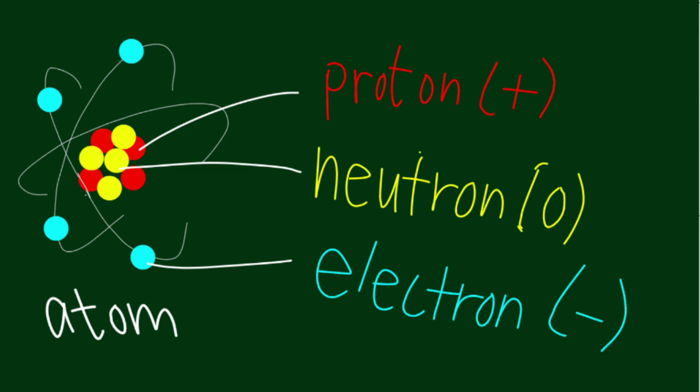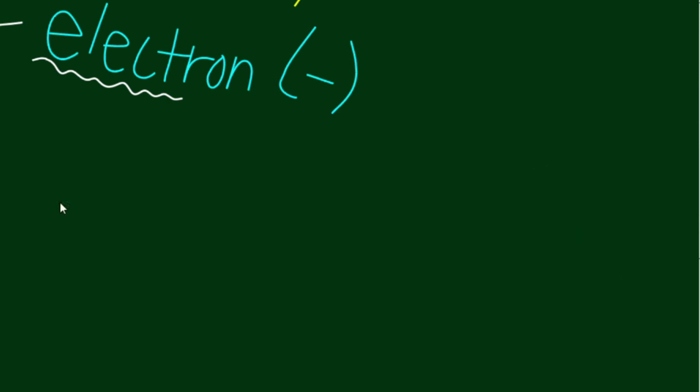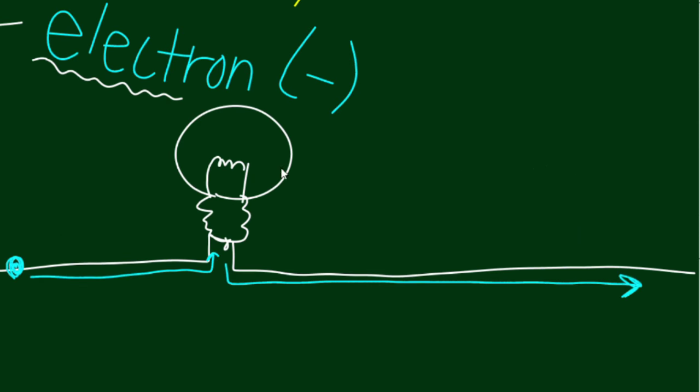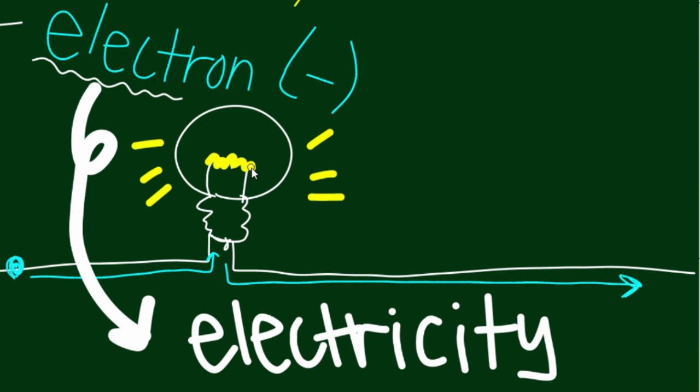Sound familiar? That's because when these electrons move through a circuit, we get electricity. But we'll come back to that later.